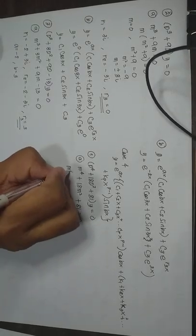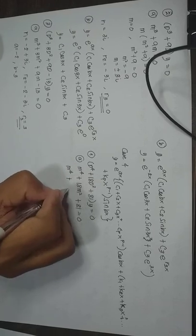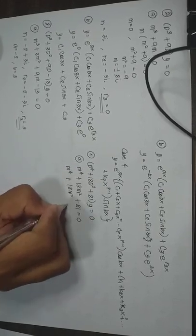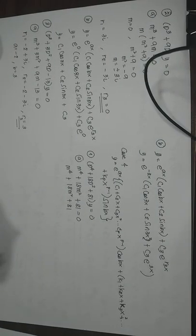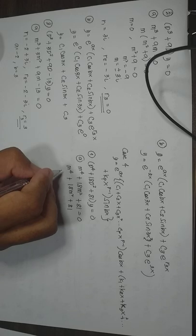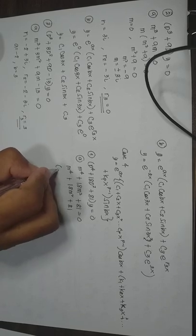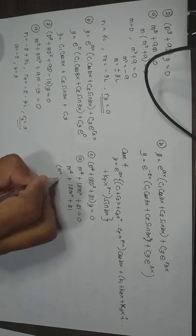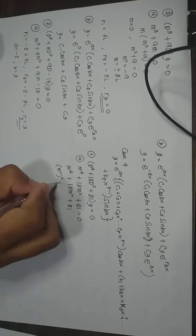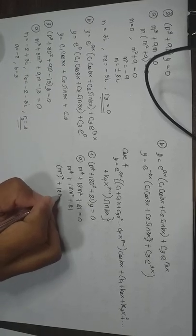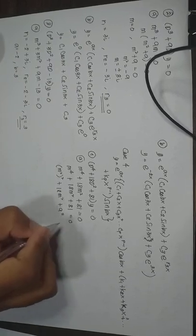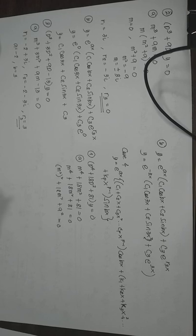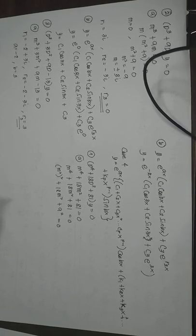We have M to the 4th plus 18M squared plus 81. We can write this as M squared squared plus 18M squared plus 9 squared equal to 0. If we let M squared equal to N, this becomes N squared plus 18N plus 81 equal to 0.